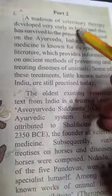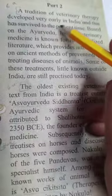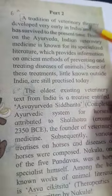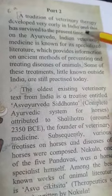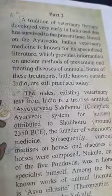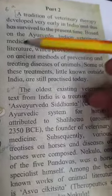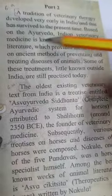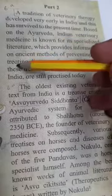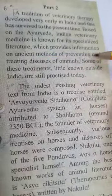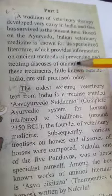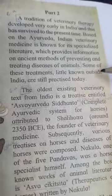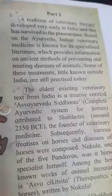A tradition of veterinary therapy developed very early in India and has survived to the present time. Based on Ayurveda, Indian veterinary medicine is known for its specialized literature which provides information on ancient methods of preventing and treating diseases of animals. Some of these treatments, little known outside India, are still practiced today.